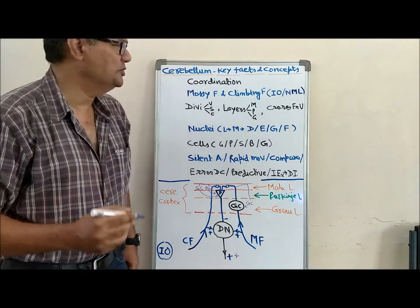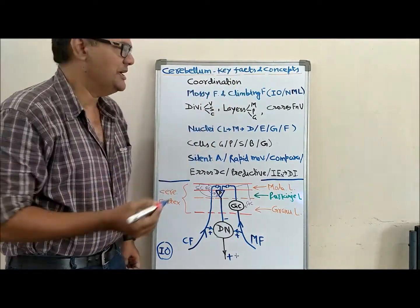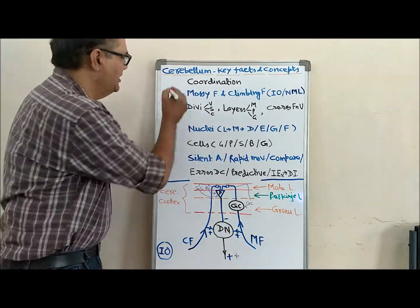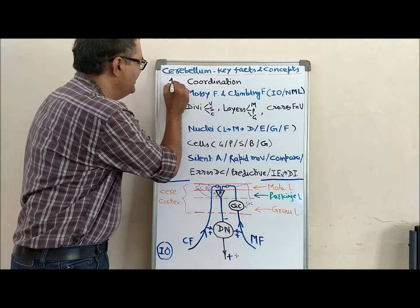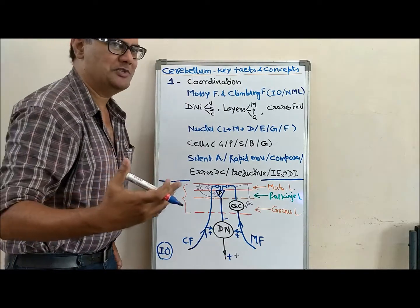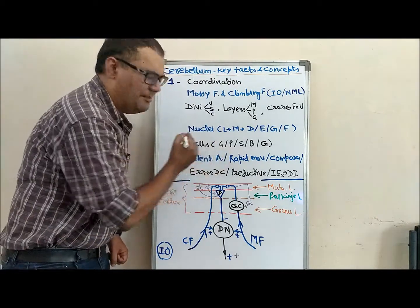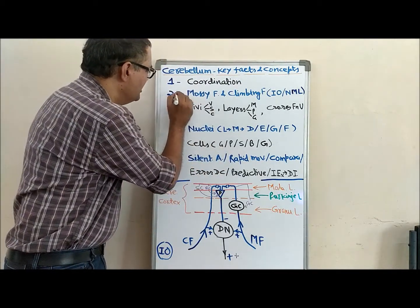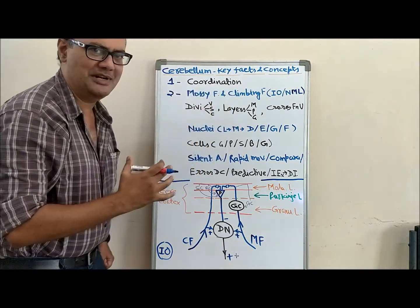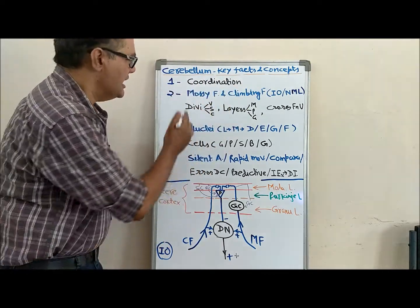Hello friends, let's discuss some key facts and concepts about cerebellum using numbers. Number one: the main word about cerebellum is coordination. It coordinates rapid motor activity. There are two types of afferent fibers that input into the cerebellum.